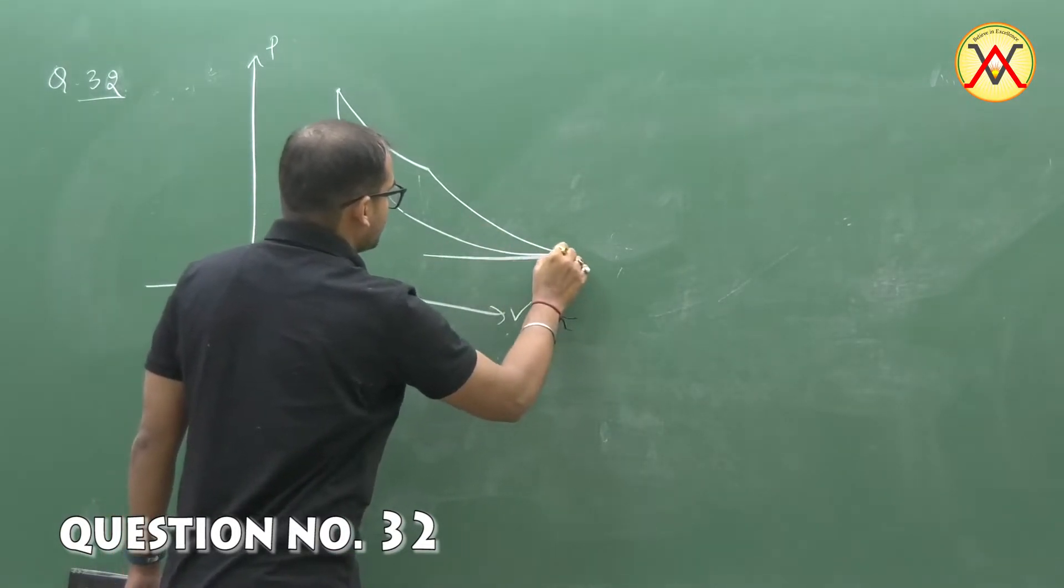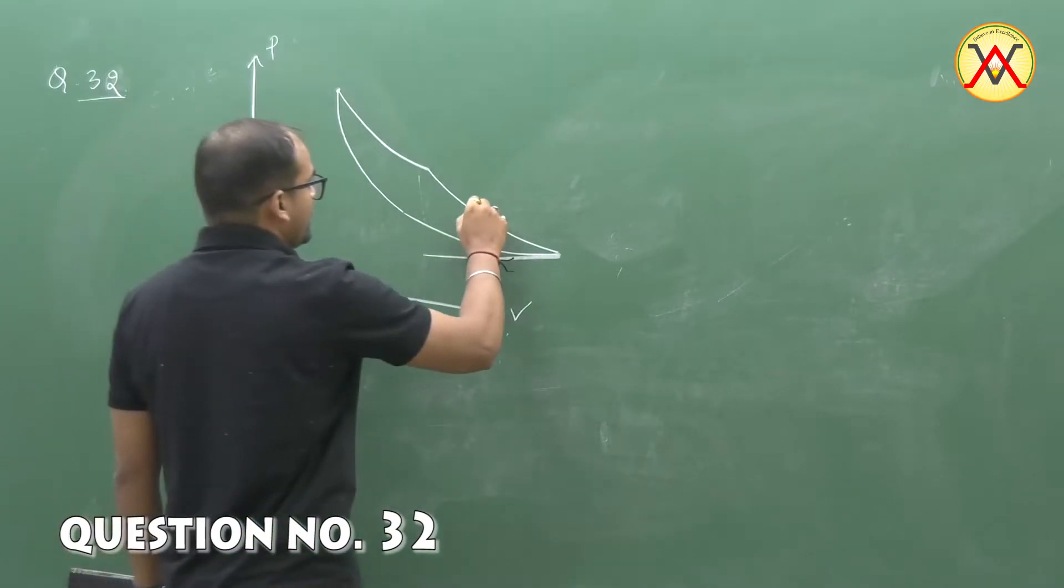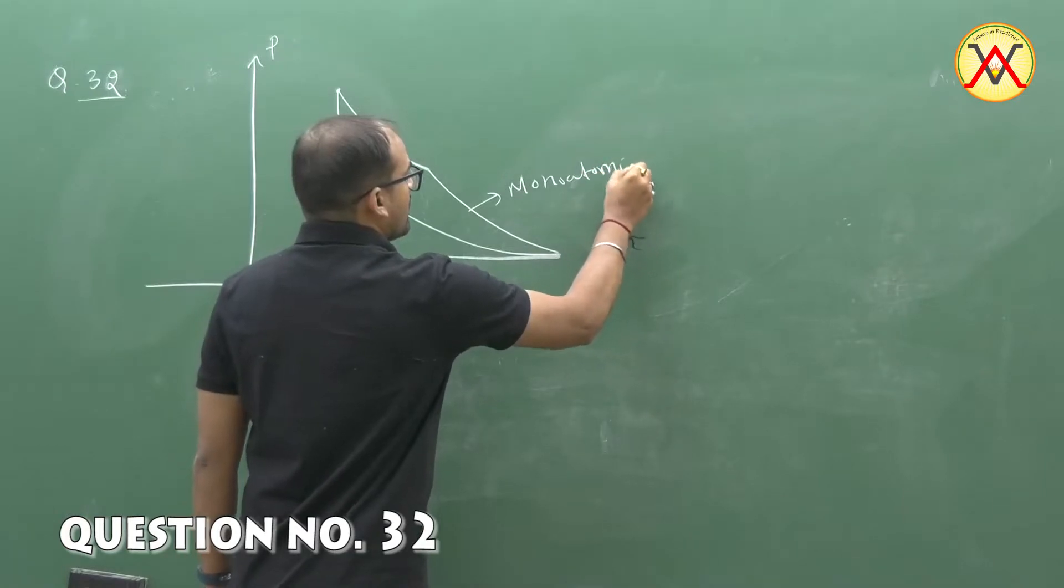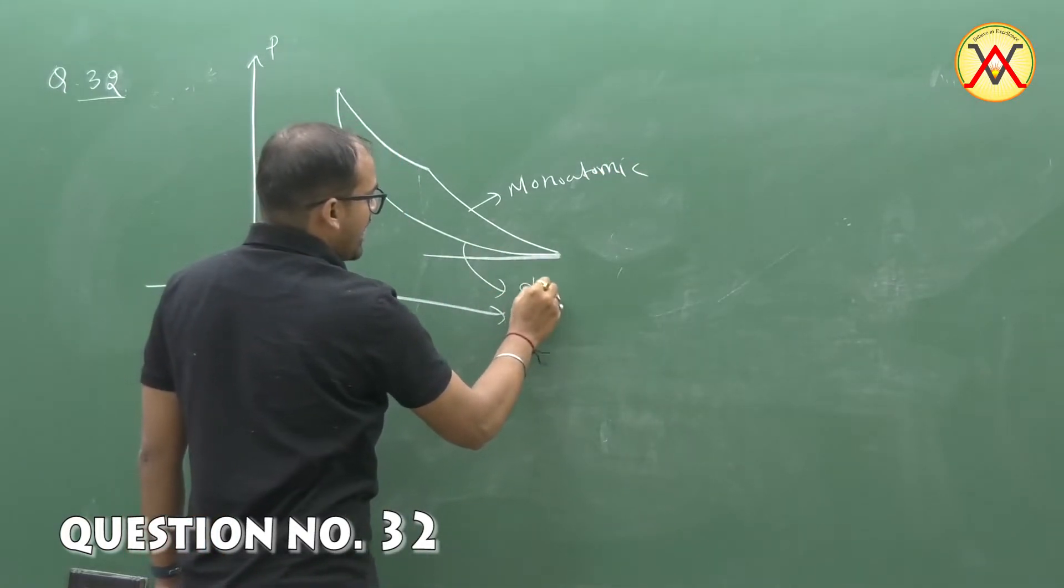According to the concept of slope, we can say that the upper one should be monatomic and the lower one should be diatomic gas.